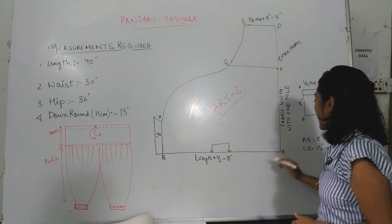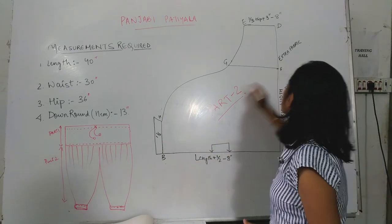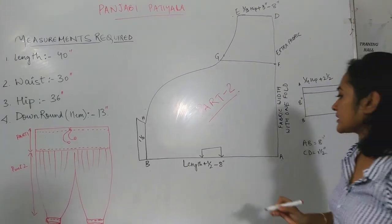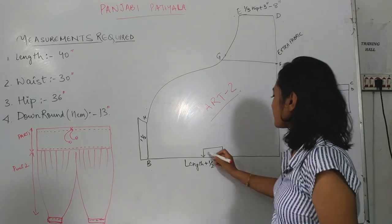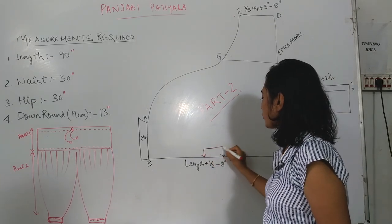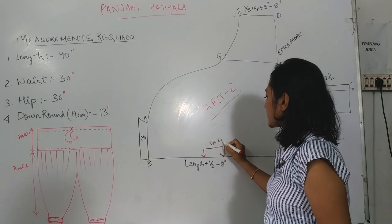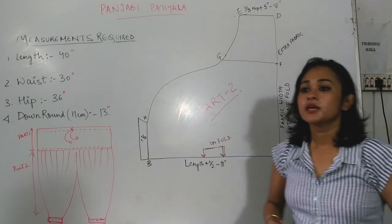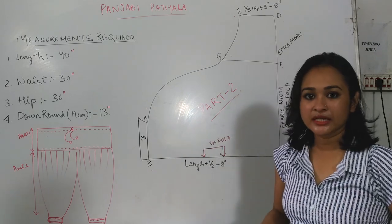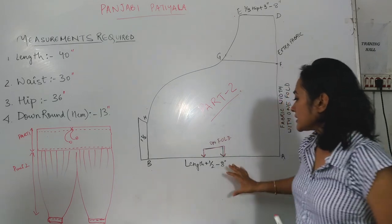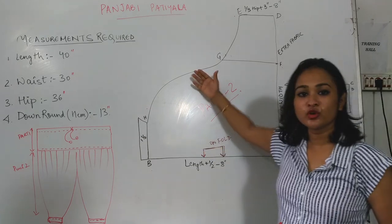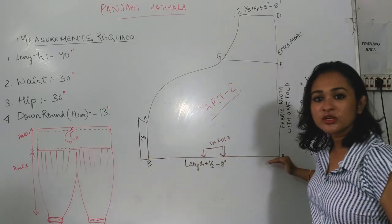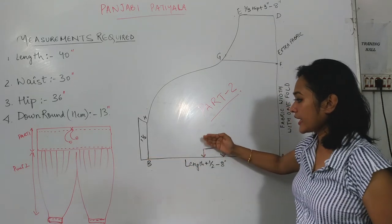I have marked all these points in the alphabet so that you will understand what measurements are after drawing. This is on-fold — when we cut the fabric, we will keep the fabric in a fold. This is the fold line. The fold line should always be on your side.